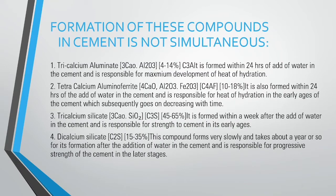Tricalcium silicate is formed within a week after the addition of water to the cement and is responsible for strength of cement in its early age. Dicalcium silicate forms very slowly, taking about a year for its formation after the addition of water, and is responsible for the progressive strength of cement in the later stage.